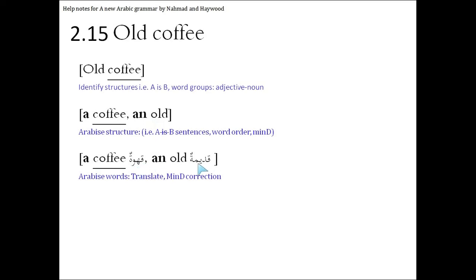Then we will translate a coffee to qahwah. And old is qadeem, but we're going to put a tamarbootah, because qahwah ends in a tamarbootah, which is a sign that this word is feminine, and therefore the describing adjective also has to be feminine. Putting it all together, we get qahwatun qadeematun, old coffee.